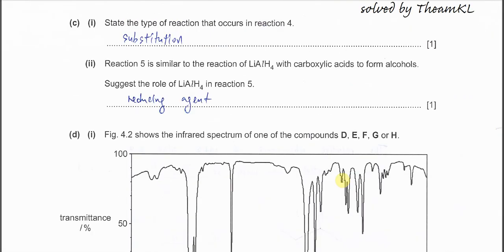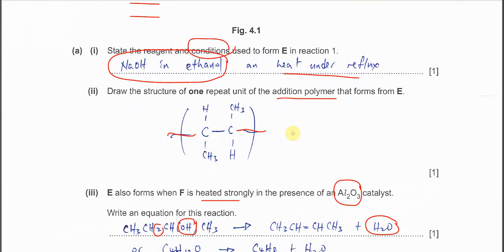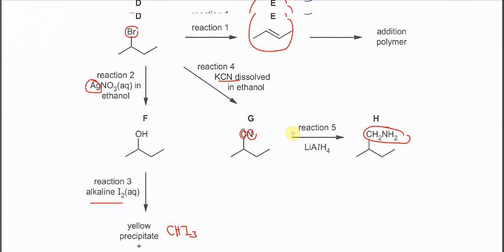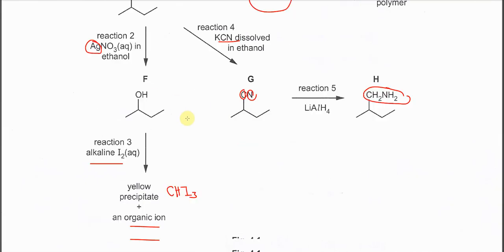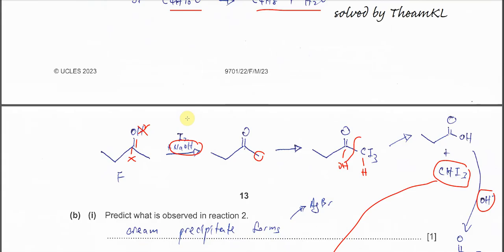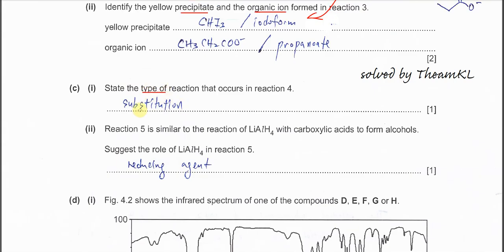C part 1, state the type of reactions that occur in reaction 4. Reaction 4, let's get back to that reaction 4. KCN in ethanol with this so the cyanide substitutes the bromine. So therefore the type of reaction is substitution.